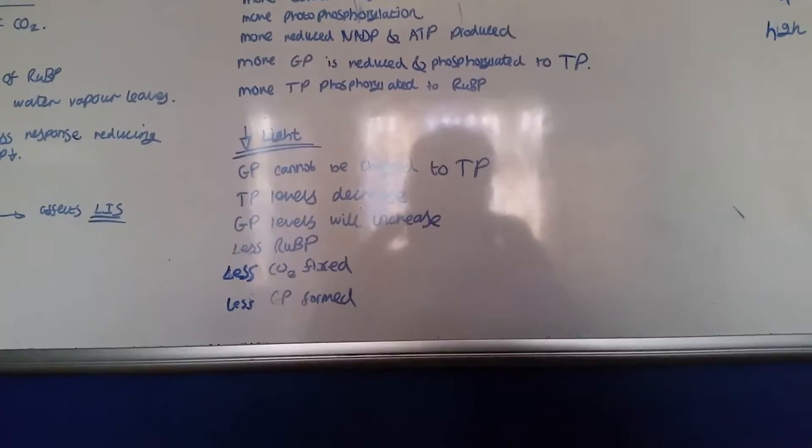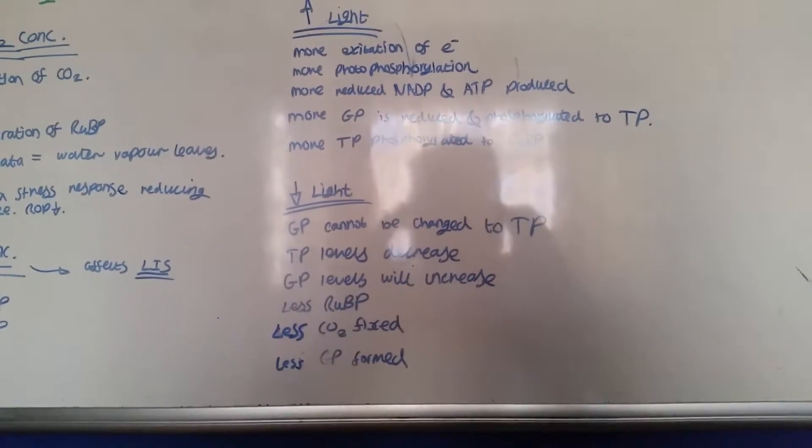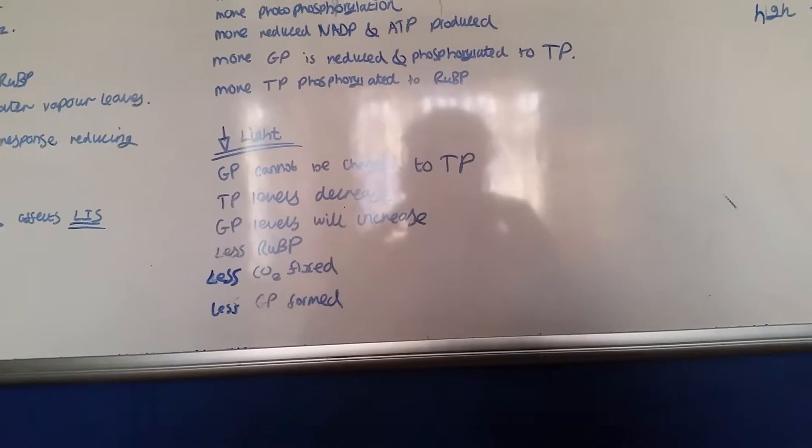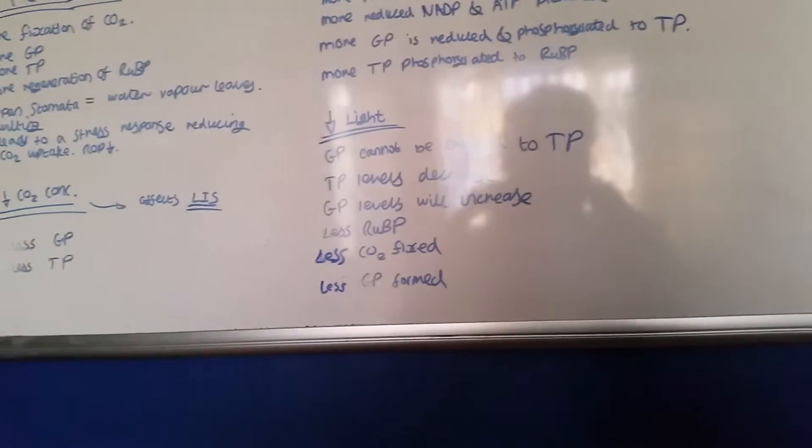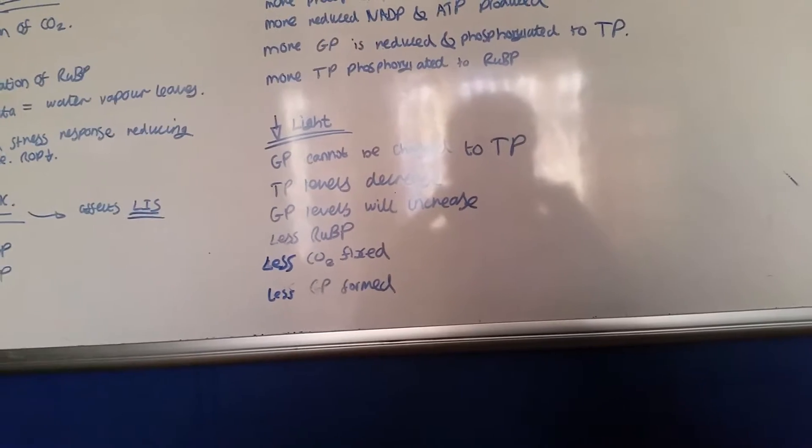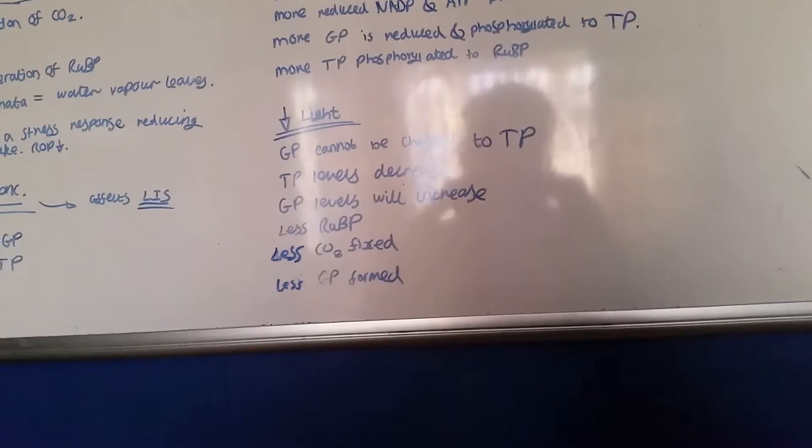If there is a low light intensity, GP cannot be changed to TP. The TP levels will decrease, the GP levels will increase, and ultimately there will be less IUB regeneration. This also means there is less CO2 fixated and less GP is formed.